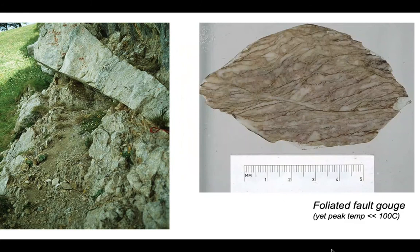Directly adjacent to that slab of rock caught in the fault zone, we have foliated fault gouge — a fault gouge with a pronounced rock fabric, as you can see in this sliced hand specimen. Commonly, foliated fault gouges like this are thought to occur at relatively high temperatures, yet the peak temperature experienced by these rocks was considerably lower than 100 degrees centigrade.